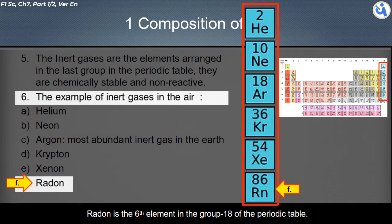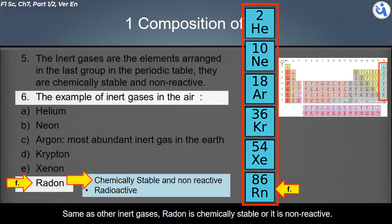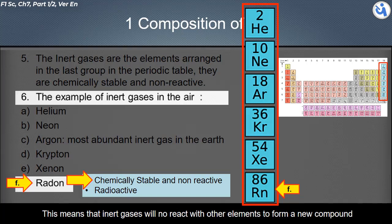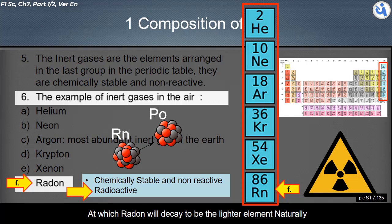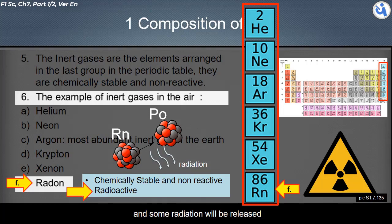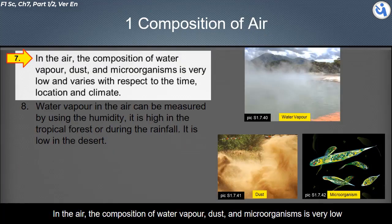Same as other inert gases, radon is chemically stable and non-reactive, meaning inert gases will not react with other elements to form new compounds. However, unlike other inert gases, radon is radioactive. Radioactive means that radon has an unstable atomic nucleus, and it will naturally decay into lighter elements, releasing some radiation into the air.